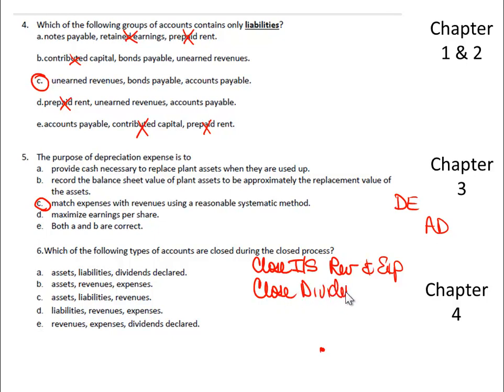And the reason we close revenues and expenses is to determine in our accounts specifically what net income is, and to move that net income, the difference between the revenues and expenses, into retained earnings. And the reason we close dividends is to zero out our dividends for the period, and we close it into, again, retained earnings. So looking at our choices,